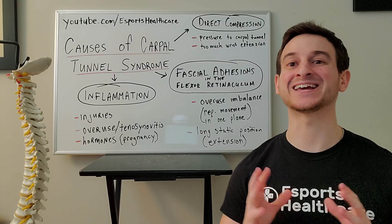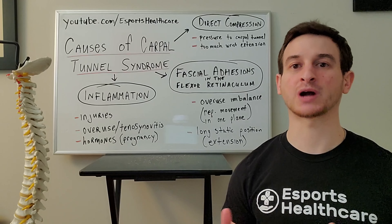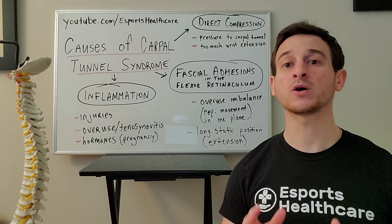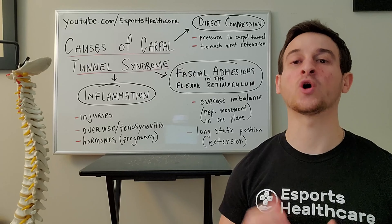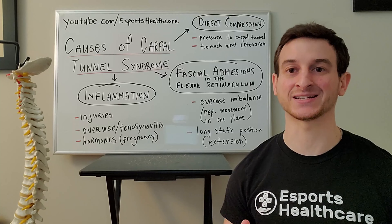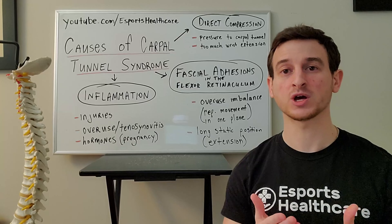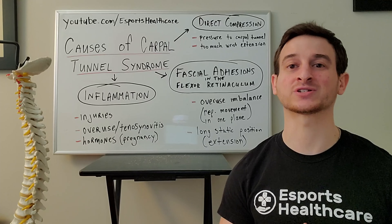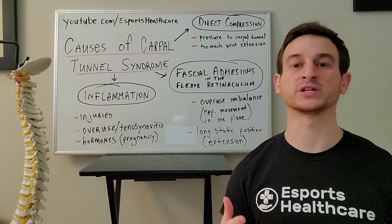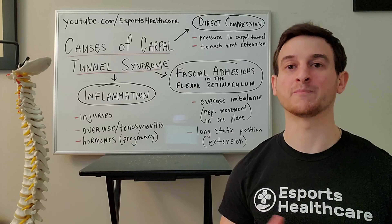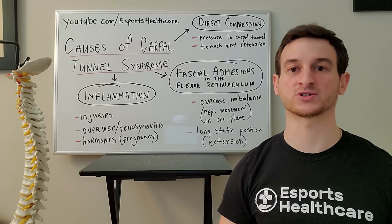The first is inflammation. This is obviously seen with any injuries or trauma to the area, but also seen with repetitive strain injuries which are found with overuse of the flexor tendons. This will lead to inflammation of the tendon sheath which surrounds the tendon, a condition known as tenosynovitis. This is often found with people who heavily use the keyboard or mouse, as they are constantly pressing down with their fingers using those flexor tendons.